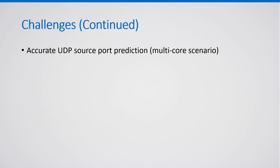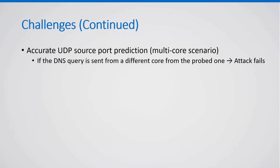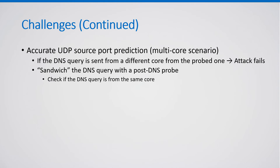Another challenge is accurately predicting the UDP source port when the target machine is multi-core. If the DNS query is sent from a different core from the one the attacker probed, the attack fails. To improve the attack's odds, the attacker sandwiches the DNS query with a post-DNS probe. If the flow label from the post-DNS probe matches the predicted sequence, the attacker can assume the DNS query was emitted from the same core and proceed. Otherwise, the attacker skips this attempt, saving time and packets.